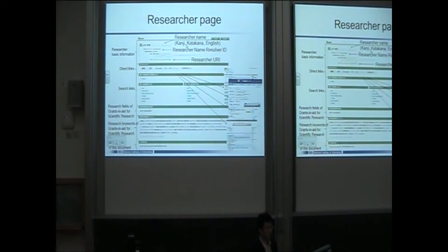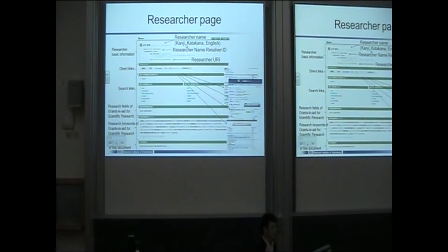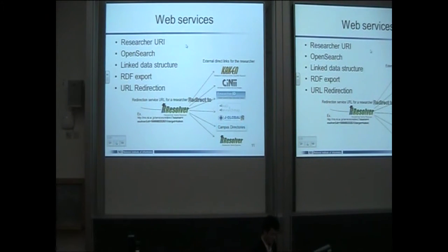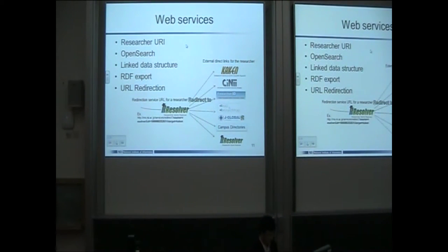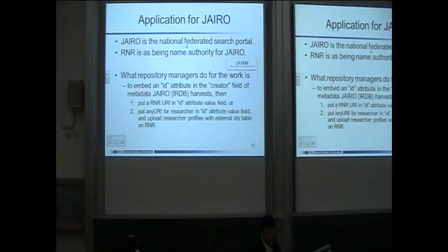This slide shows the researcher page in our system. The top of the slide shows the researcher's basic information. Users can access the database through the network and click on the search range. The researcher page shows the identification of researchers, research fields, and keywords from the grant database. We also provide a researcher URL, open search, data export, and URL redirections.